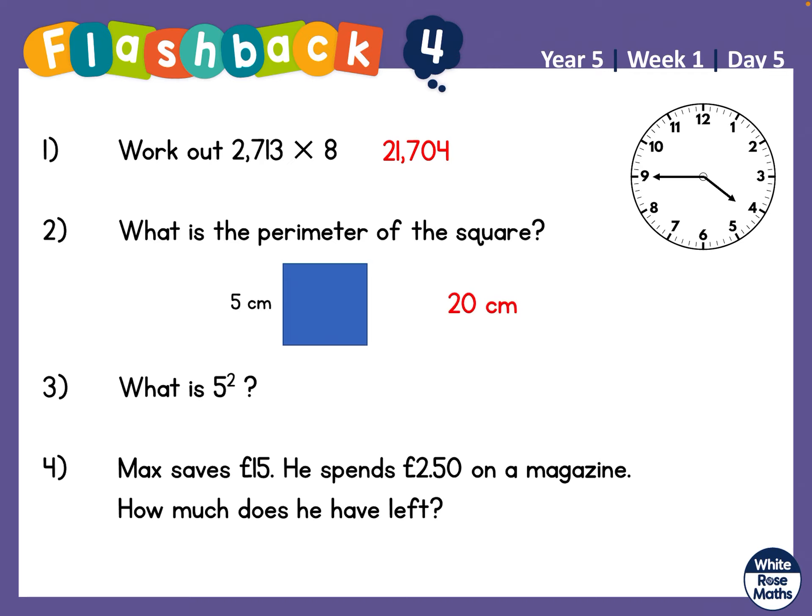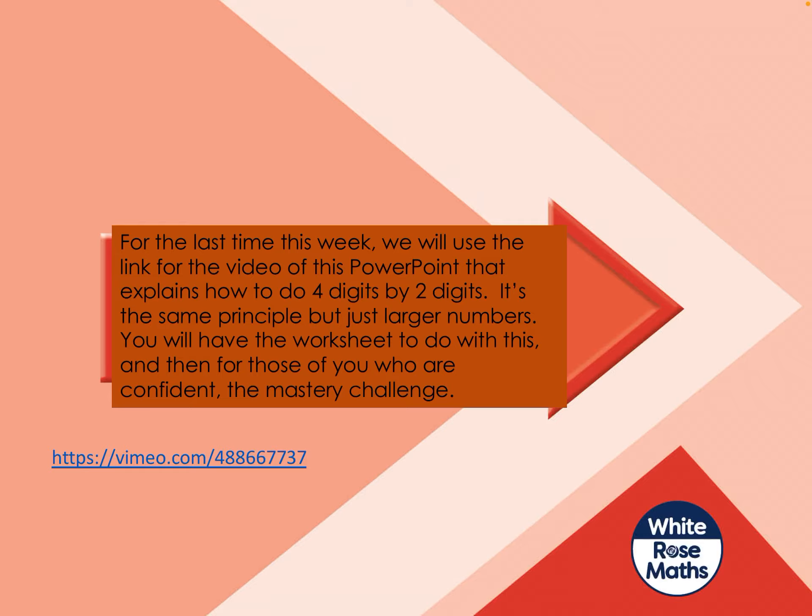Okay, answer number one is 21,704. Well done if you've got that. Perimeter of this square is 20 centimeters. Why is that? Because that's five, that's five, that's five and that's five. Four lots of five is 20. Five squared is of course 25. And Max has 15 pounds, he spends two pound 50 on a magazine, how much does he have left? 12 pounds 50. Well done if you got that correct.